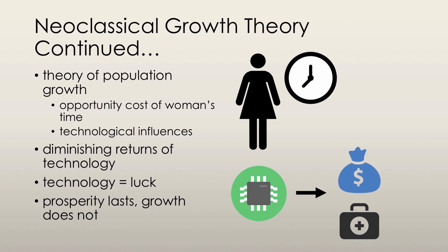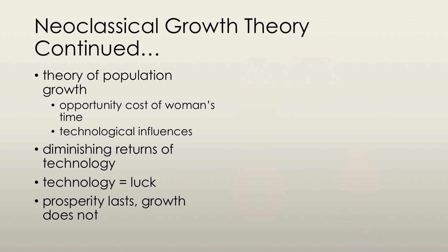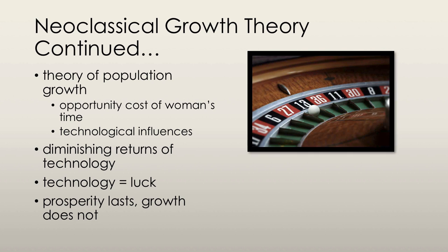In terms of technology change and diminishing returns, it's assumed that technological change results from chance. Luck results in rapid technological change, and bad luck results in slow technological change. Neoclassical growth theory states that prosperity resulting from new technologies will last, but economic growth will not, unless the technology keeps advancing.